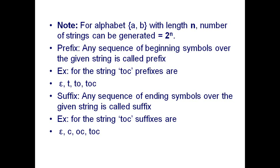So the prefixes for TOC are: epsilon, T, TO, and TOC. These are all beginning symbols taken in sequence order from start to end. You should not take symbols in a different order — for example, T and C as TC is not a prefix, because sequence is violated.